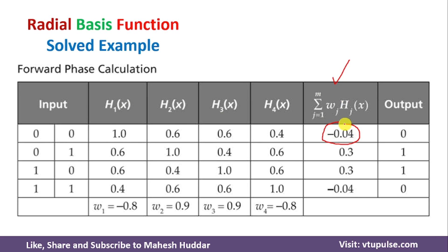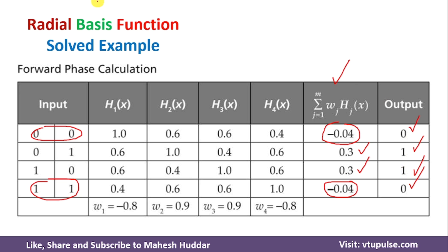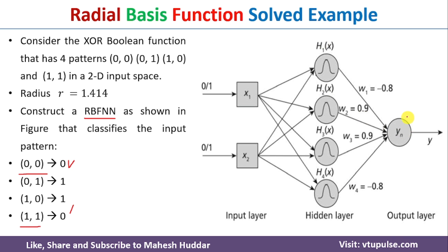Looking at the results: outputs less than 0 (minus 0.04) correspond to class 0, and outputs greater than 0 (0.3) correspond to class 1. For inputs 00 and 11 the output is 0, and for inputs 01 and 10 the output is 1 — which is exactly what we expected for the XOR function. Since the expected values are obtained with these weights, there is no need to update the weights. If the results were not as expected, we would use the back propagation algorithm to update the weights and repeat until the correct outputs are achieved.